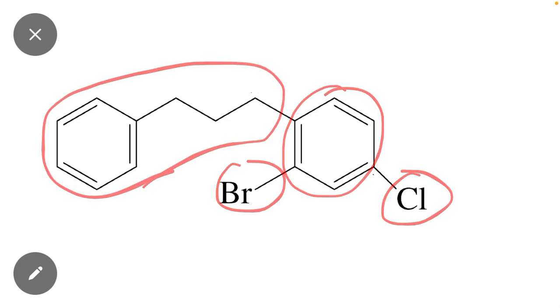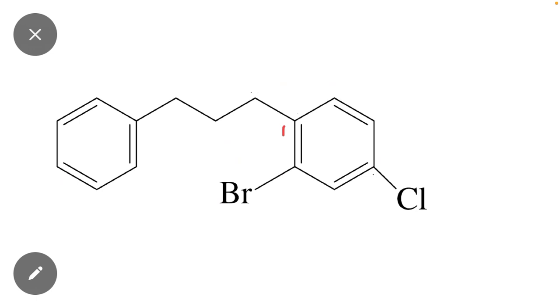And the numbering will start from this carbon: one, two, three, four, five, and six. Here you can see that bromo is present at position 2, chloro is present at position number 4.